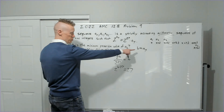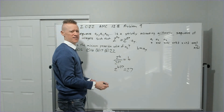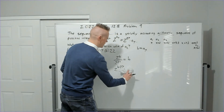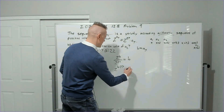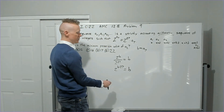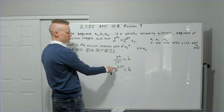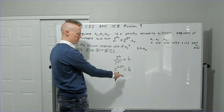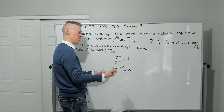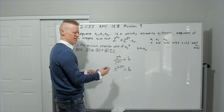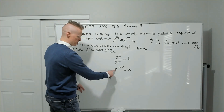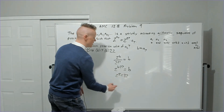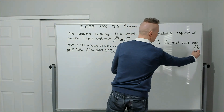Clearly b must be more than 27, and we need b to equal a power of 2. The next power of 2 above 27 is 32. Checking: 2^(32−27) = 2⁵ = 32 ✓. So x + 6d = 32, meaning a₇ = 32.